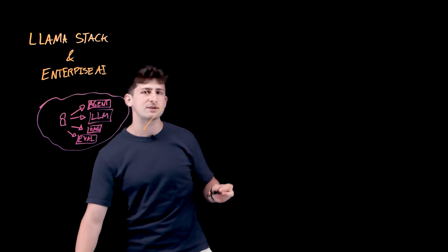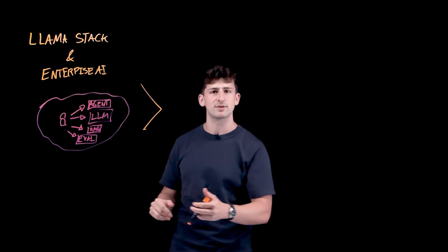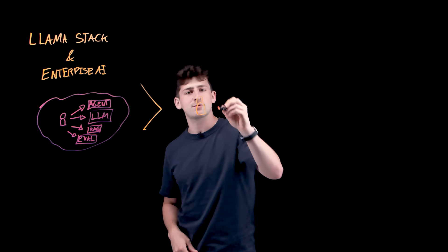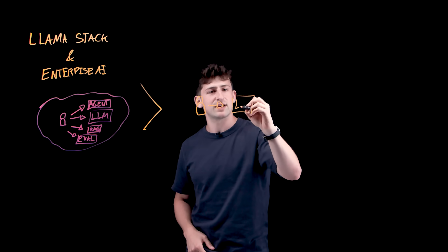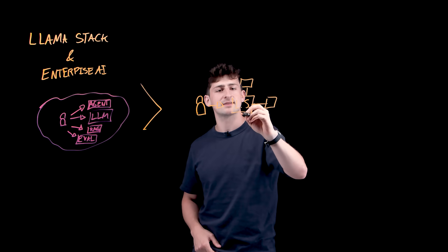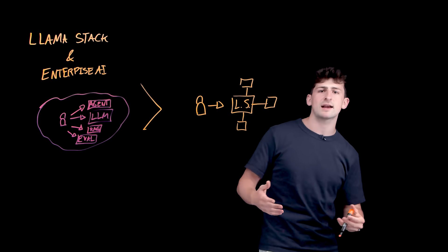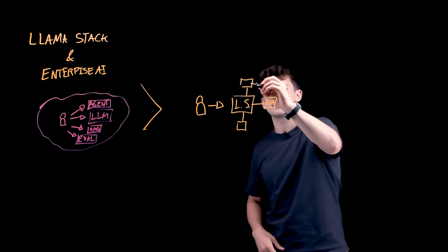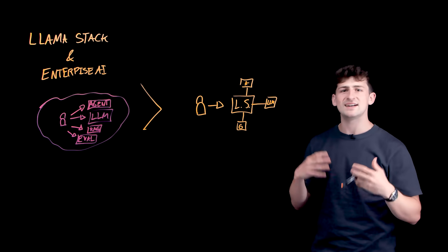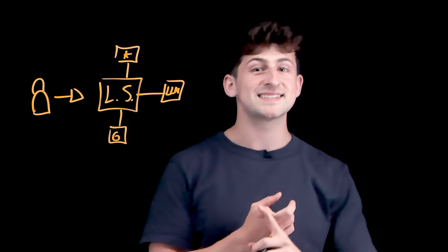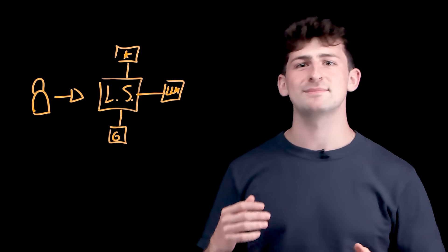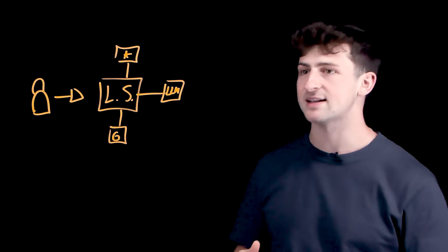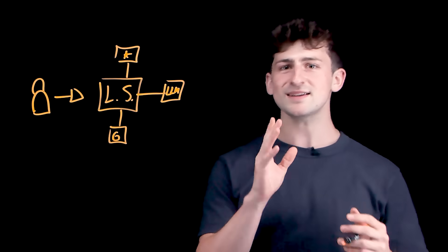The idea with LlamaStack is to bring this together and standardize these different layers of a generative AI workload with a common API that can run from a developer's laptop to the edge to an enterprise data center and more. LlamaStack is a central API that allows us to plug and play with different components — fulfilling regulatory, privacy, and budgetary needs — with pluggable interfaces for features like inference, agents, and guardrails. Just as Kubernetes defines core standards for managing containers and allows different vendors to provide components like container runtimes, CI/CD, or storage backends, LlamaStack repeats this pattern for generative AI applications — and not just for Llama models, but any model running in Ollama, VLLM, and many other inference providers.